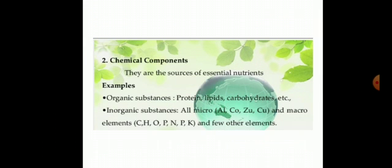Chemical components are of two types: organic substances and inorganic substances. Chemical components are the sources of essential nutrients. Organic substances, examples are proteins, lipids, carbohydrates, etc. And inorganic substances include all micro and macro elements: hydrogen, oxygen, nitrogen, calcium, iron, potassium, sodium. All these are inorganic substances.